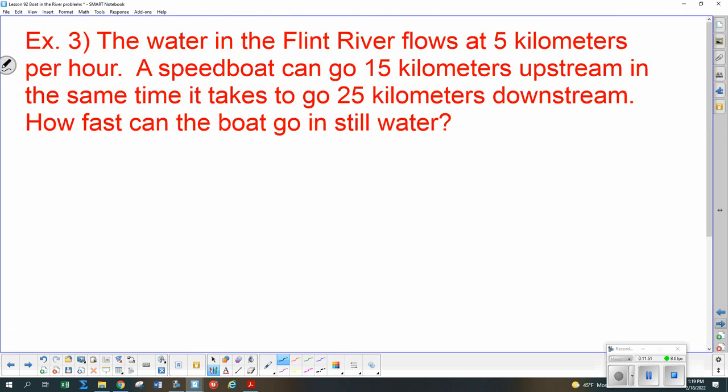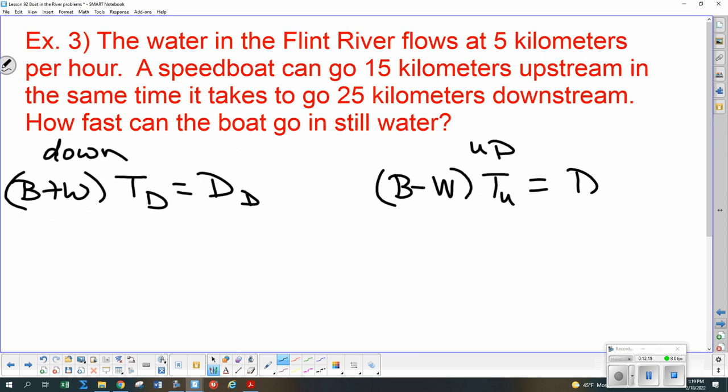One last one then. And so let's see. Downstream, B plus W or B minus W, Alex? So that's the faster one. B plus W times the time downstream is the distance downstream. And upstream, B minus W times the time upstream equals the distance upstream. And this time, I'd like you to put the numbers in where they belong in that. And then we'll check your setup.